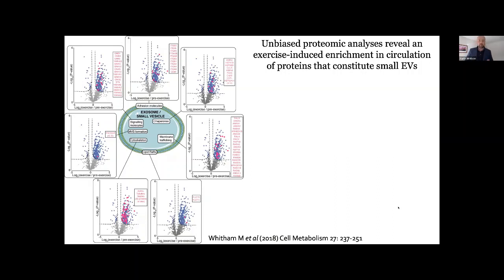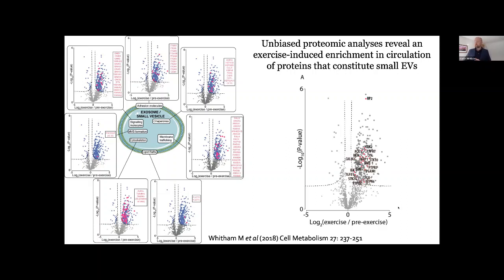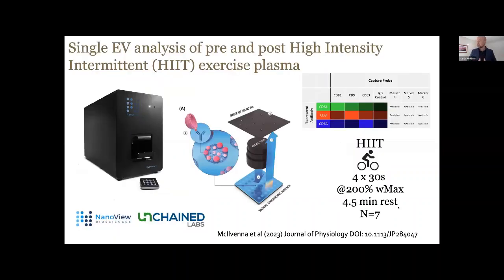When we actually look at the exercise data expressed as a series of volcano plots, we see with exercise quite a specific enrichment of proteins that are part of protein classes that constitute an extracellular vesicle and a small extracellular vesicle. We think this adds something to the literature with quite unbiased data. We also found some really interesting signaling molecules and metabolic enzymes in this proteomic analysis, which have been the focus of some of our work of late.